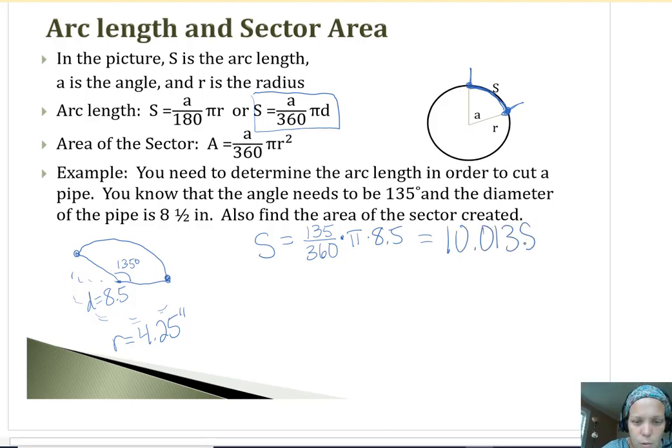10.0138. So pretty much right on. I mean, if you're measuring to the nearest even 32nd, this is going to be even 10 inches, which looks about right that this would be 10 inches because if the diameter is 8.5, that curve is going to make it a little longer. So that looks reasonable.